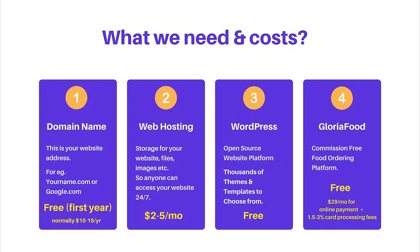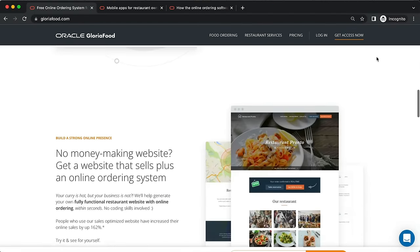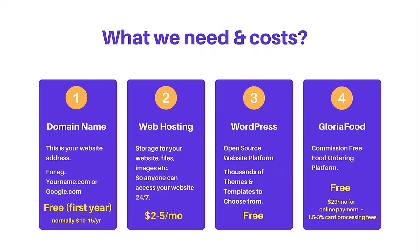The fourth thing we'll need is GloriaFood — the commission-free ordering platform I personally use for my dad's restaurant. To accept cash on delivery or cash/card at your store premises, it's completely free with no commission. If you want to accept credit card online or PayPal online, it's $29 per month. You can operate with just cash on delivery if you prefer.